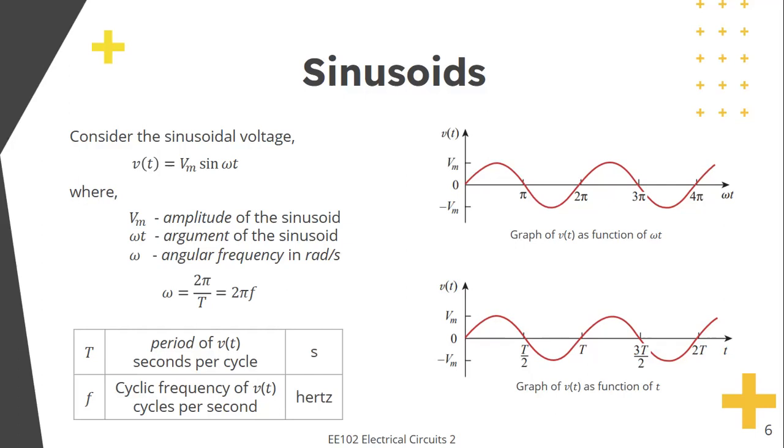So, sinusoids. Let's consider V equal to Vm sin omega t, where Vm is the amplitude, omega t is the argument, and omega is the angular frequency in radians per second. Take note that omega is equal to 2π over T or that's equal to 2πf. So T or period is in seconds per cycle, and frequency, the reciprocal of that, is in cycles per second or hertz.